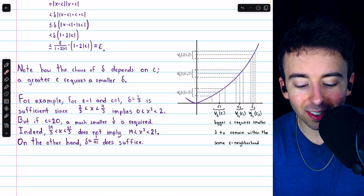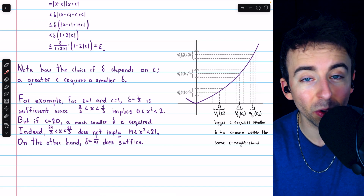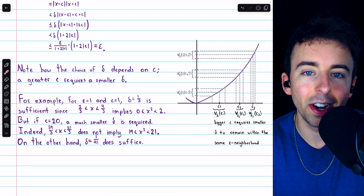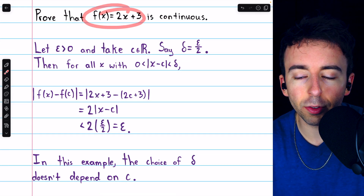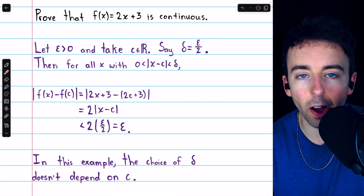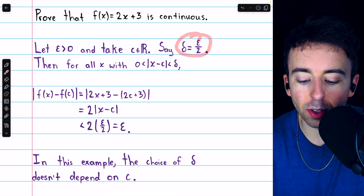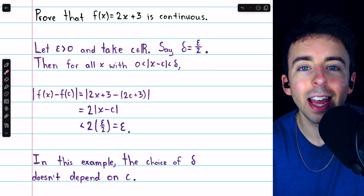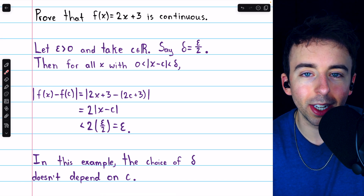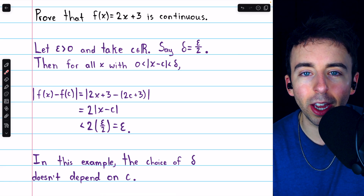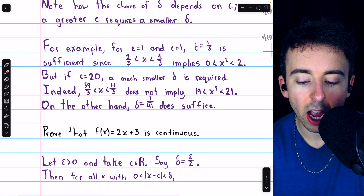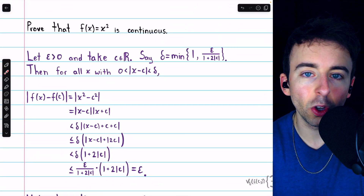Clearly, that delta doesn't work. Instead, in this case a delta of 1 over 41 will work, which is quite a bit smaller than one-third. We see that as c gets bigger, delta needs to get smaller to stay within that epsilon neighborhood. This is in contrast to a function like 2x plus 3. To prove that this is continuous is very straightforward, and the value of delta does not depend on c at all. No matter what c is, delta equals epsilon over 2 is sufficient to establish continuity at c. So in this example the choice of delta doesn't depend on c, and this is the key difference between continuity and this new stricter notion of uniform continuity. 2x plus 3 is, in fact, uniformly continuous, whereas x squared on the real numbers is not uniformly continuous.